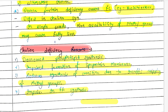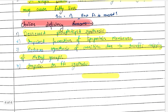Now let us see how choline deficiency causes fatty liver. First, choline and inositol are components of phospholipid synthesis — their deficiency impairs this. Second, impaired formation of the lipoprotein membrane, since without choline the lipoprotein membrane cannot form. Third, reduced synthesis of carnitine due to insufficient supply of methyl groups. Fourth, impairment in fatty acid oxidation. These four points are the reasons why choline deficiency leads to fatty liver.